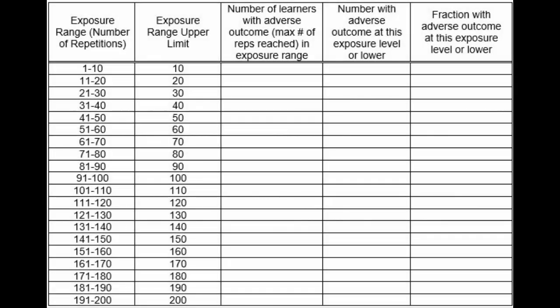We've provided an example table in this activity's instructions. It includes the exposure range, the exposure range's upper limit, the number of learners with an adverse outcome for each exposure range, the number of learners with an adverse outcome at less than or equal to an exposure range, and the fraction of those less than or equal to the exposure range with an adverse outcome.